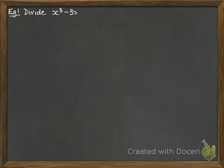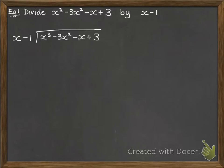So how do we do this with algebra? We're going to divide this cubic by x minus 1. So we set up a long division, just like you saw with the numbers. It looks like this. So we're looking at x minus 1 into x cubed minus 3x squared minus x plus 3.